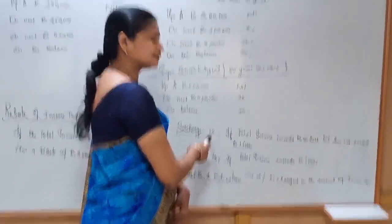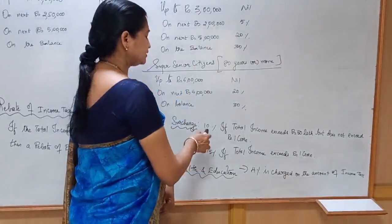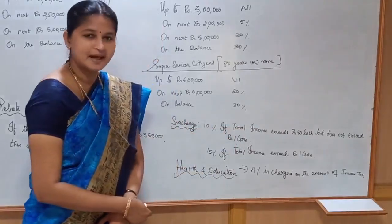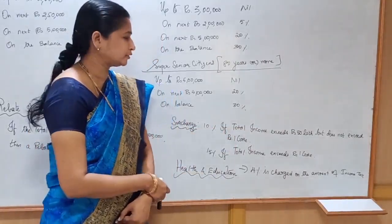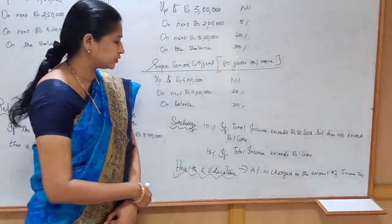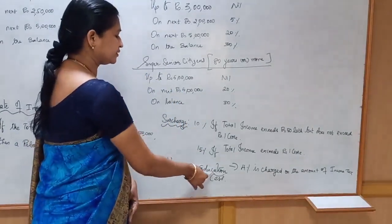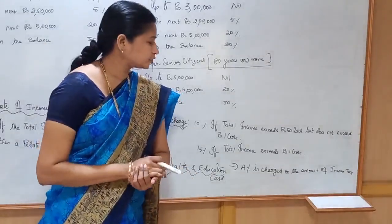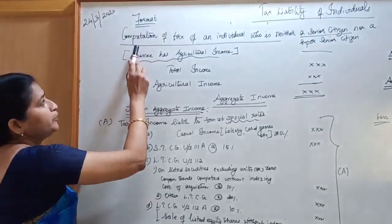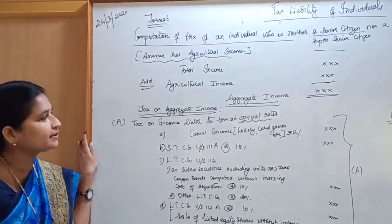Surcharge means an additional charge or additional tax. A surcharge at the rate of 10% is charged if the total income of the assessee exceeds Rs. 50,00,000 but does not exceed Rs. 1,00,00,000. A surcharge at the rate of 15% is charged if the total income exceeds Rs. 1,00,00,000. Additionally, Health and Education Cess at 4% is charged on the amount of income tax and surcharge.